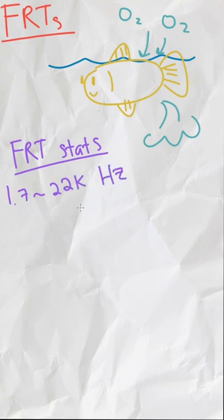These farts are created by storing air from the surface in their swim bladders, which can later be transferred into their anal ducts to make this sound. The farts are produced at 1.7 to 22 kilohertz and can last up to 7.6 seconds.